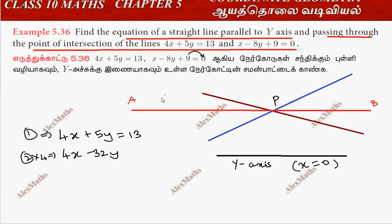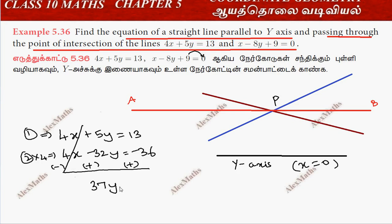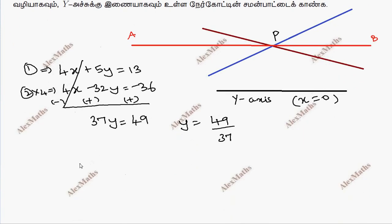The second equation is 4x minus 35y. Let's take these components. The 4x minus 4x cancels here. Putting this down, 37y is equal to 49. So y is equal to 49 by 37.